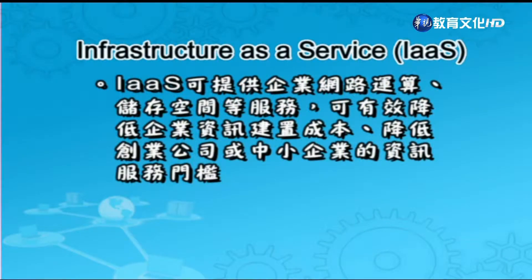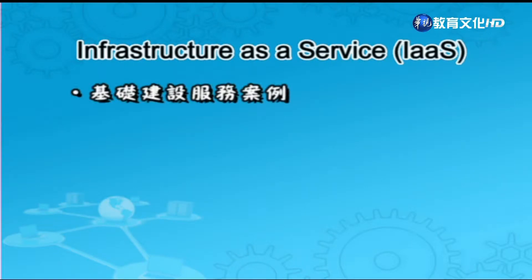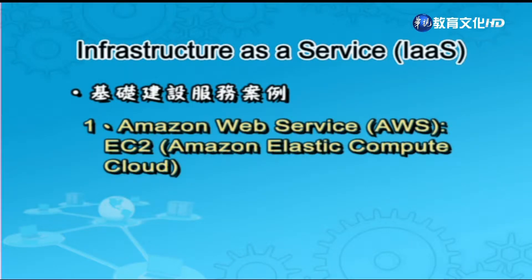IaaS是指雲端提供者提供使用者各種伺服器、儲存設備、網路設備以及CPU運算等。使用者不需自己管理或控制雲端架構，但可以自行管理作業系統、儲存設備、應用軟體以及網路元件的控制，像是主機的防火牆。IaaS可提供企業網路運算、儲存空間等服務，可直接有效降低企業建置成本，降低創業公司或中小企業的資訊服務門檻。計價方式可依照伺服器運算時間、儲存空間或網路流量的使用量來計費。IaaS的案例像是Amazon EC2、IBM Blue Cloud，或是SimonTech Online Backup做異地備援。